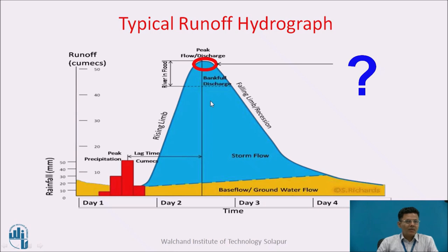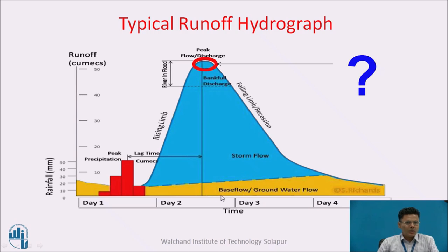This is a typical runoff hydrograph. On the x-axis we have days — day 1, day 2, day 3, day 4 — and on the y-axis we are showing two things: one is rainfall in millimeters, shown in a typical way, and another is the runoff in cubic meters per second. The blue part gives us the storm flow or surface water flow, and the yellow part shows us the base flow or groundwater flow contribution in a hydrograph.